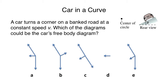A car turns a corner on a banked road at a constant speed V. Which of the diagrams could be the car's free body diagram? I'm going to let you do it. Take 30 seconds, try to write this down. Draw pictures, get paper out because we're going to do a lot of these tricky problems today. Draw a free body diagram and see if you can get the forces correct.